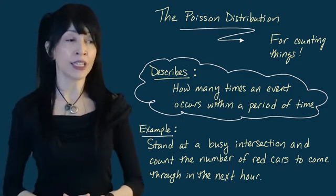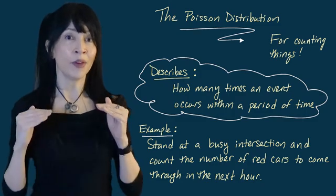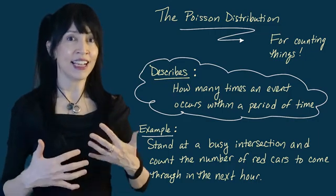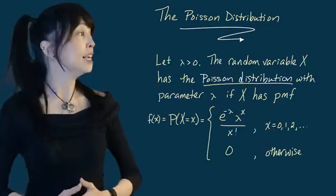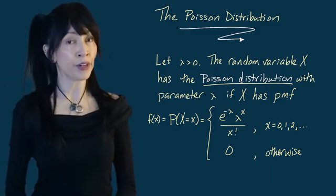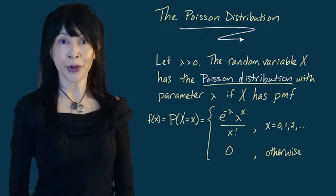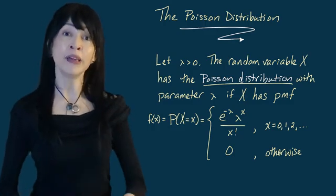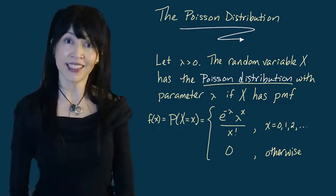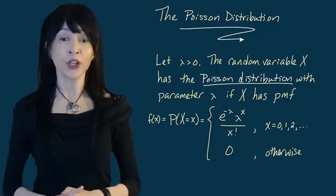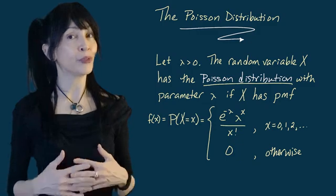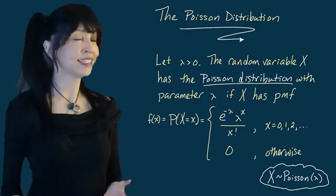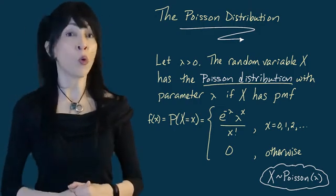Unlike our other distributions, I am not going to build this one up from scratch. I'm going to give you the probability mass function, which might look a little weird, and then try to convince you why it's a good model for a lot of things. The Poisson PMF has one parameter called lambda, any real number greater than zero. If X has a Poisson distribution with parameter lambda, then the probability that X equals some little x is e to the minus lambda, times lambda to the x, over x factorial, for x equals 0, 1, 2, and up — and zero otherwise. We write X ~ Poisson(lambda).